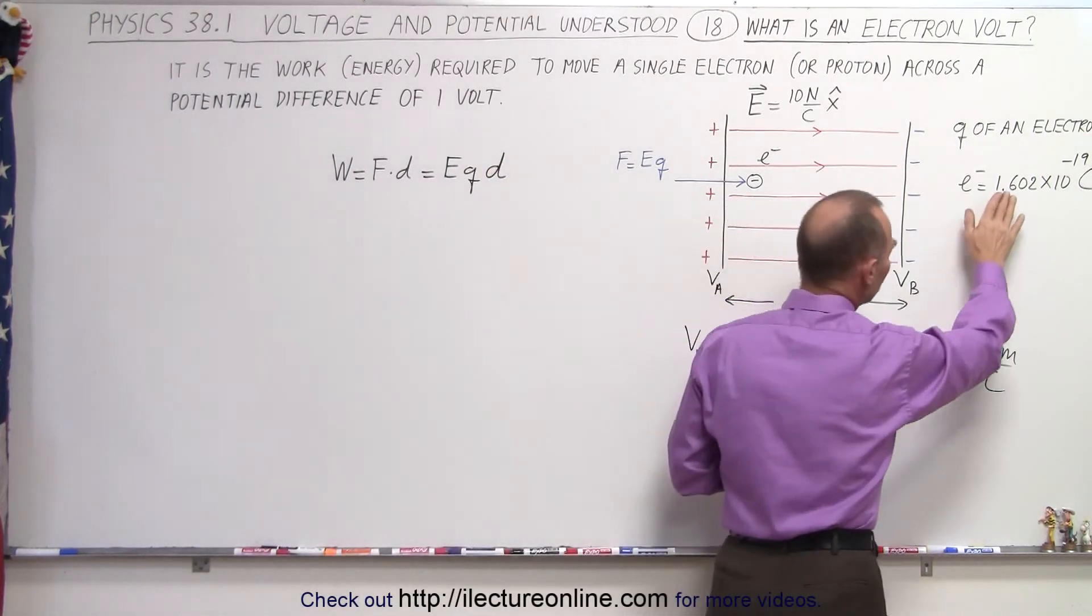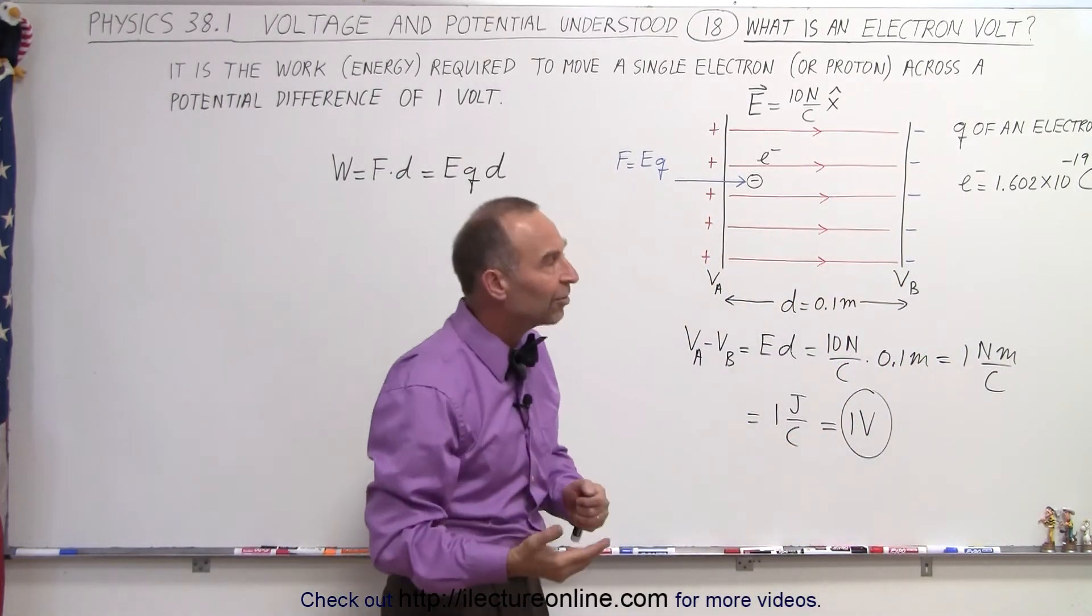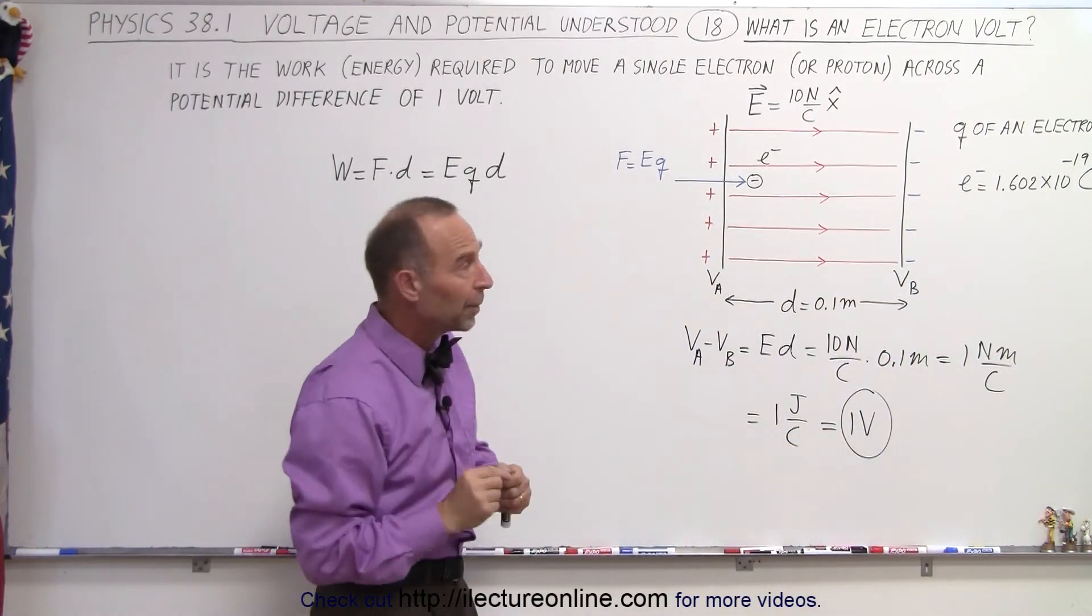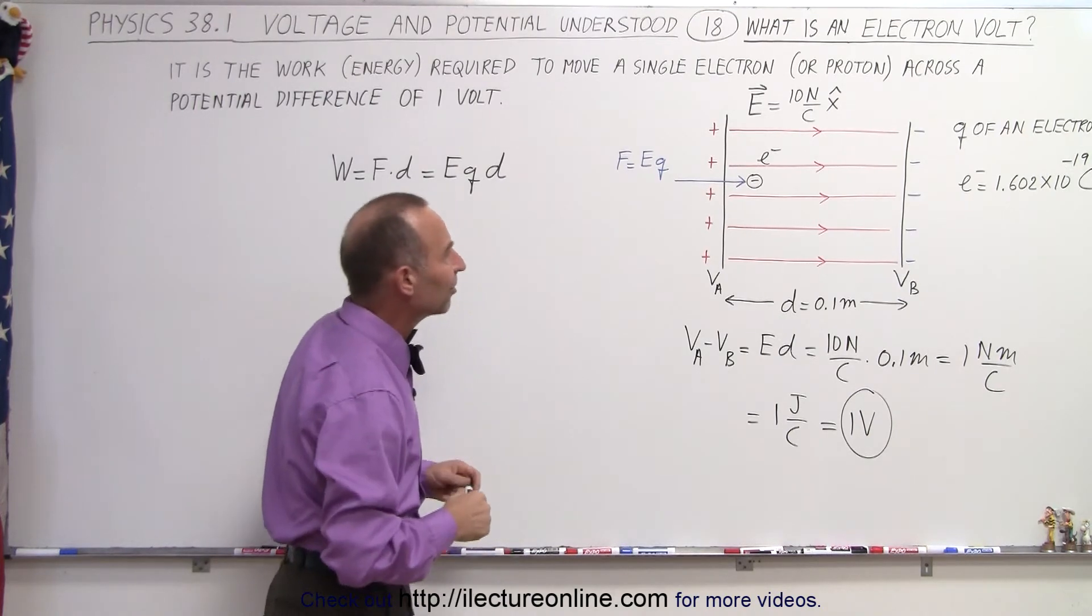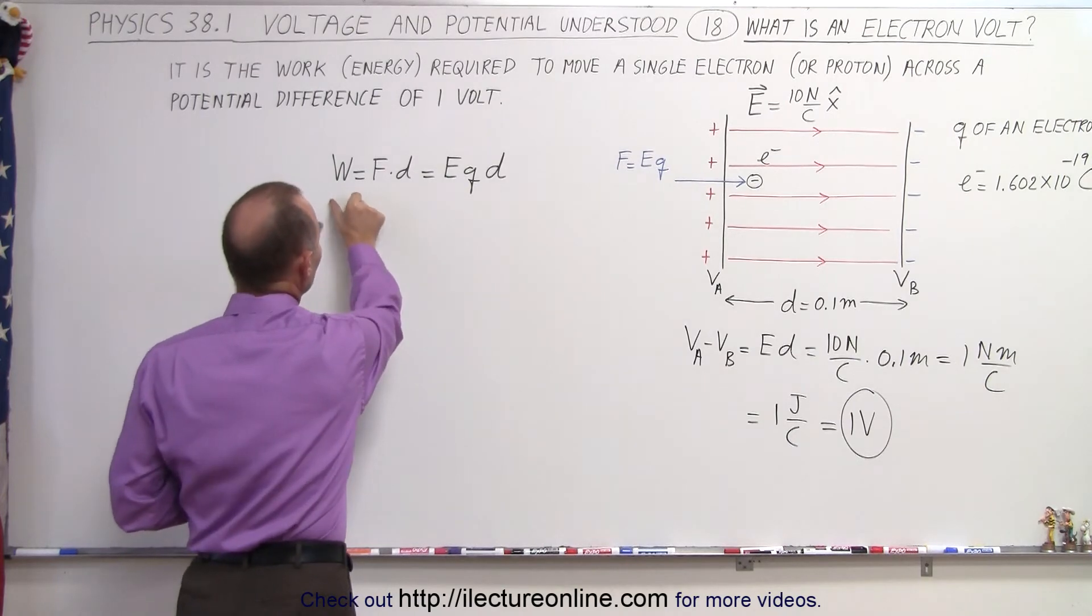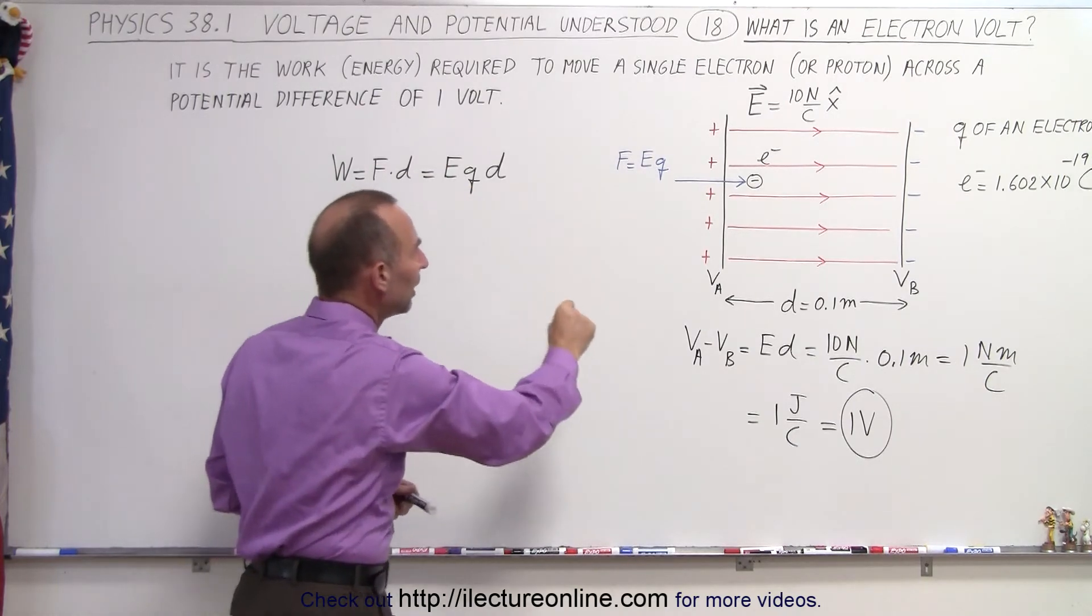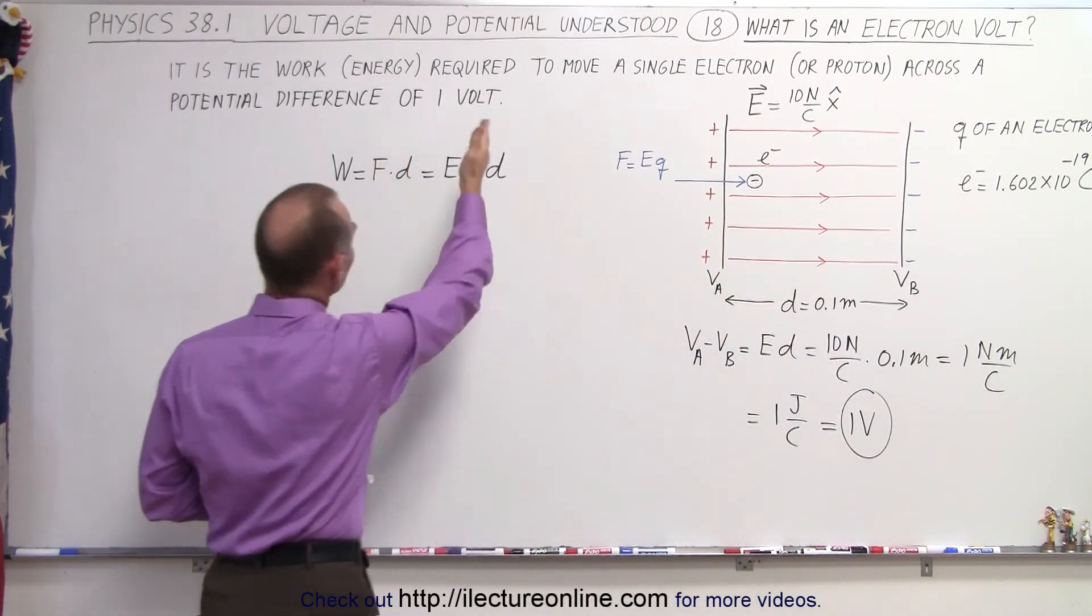And over here we wrote down the charge of a single electron, which is 1.602 times 10 to the minus 19 coulombs. It's a very small amount of charge, and typically we just call it 1.6 times 10 to the minus 19. So here we have the work done to do that, and that should then be equal to an electron volt if it's a single electron being pushed across a single volt as we have defined over here.